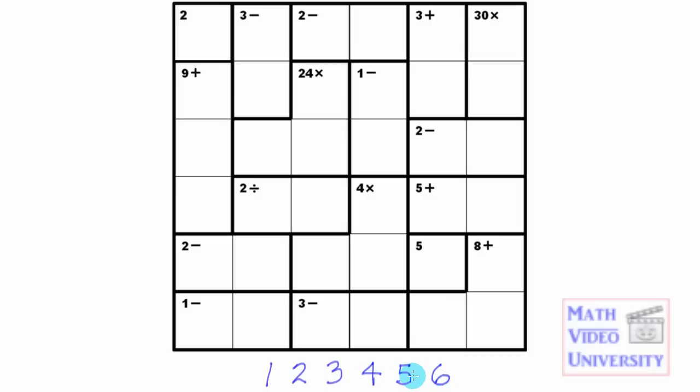If you're familiar with Sudoku, then the first two rules of KenKen are the same. You cannot repeat any of the numbers 1 through 6 in any row or any column. All the numbers must show up, but there are no repeats.